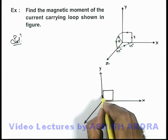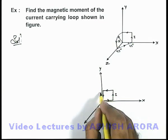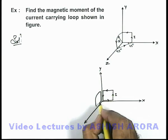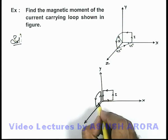This is a square loop which is carrying a current i in anticlockwise manner. Another is a quarter circular segment which is also carrying a current in anticlockwise manner.